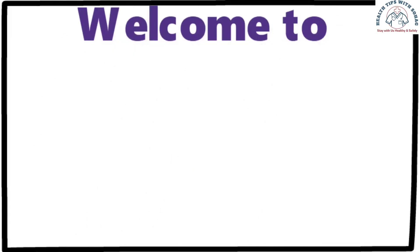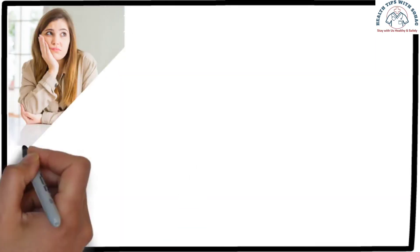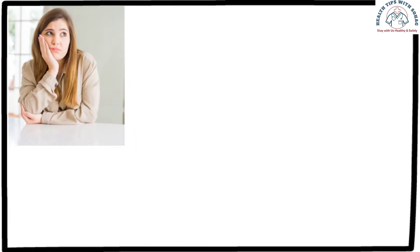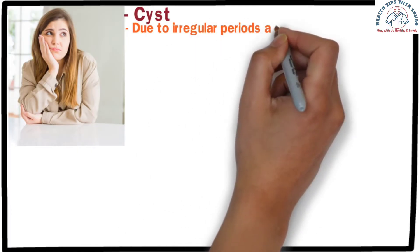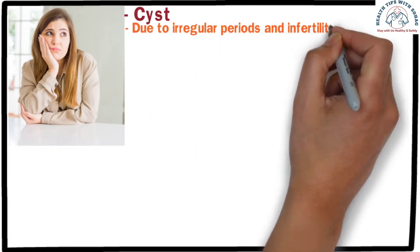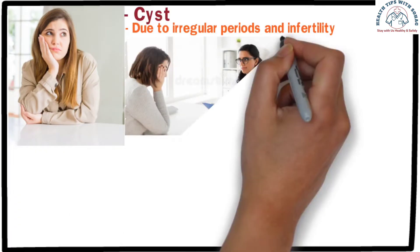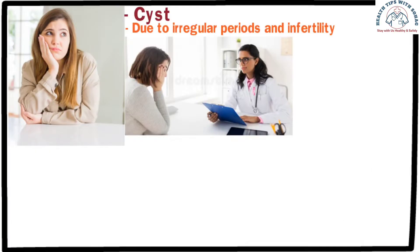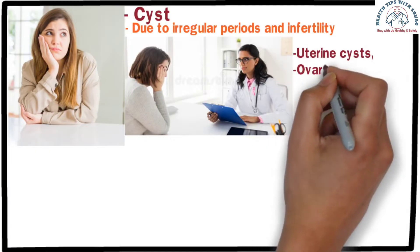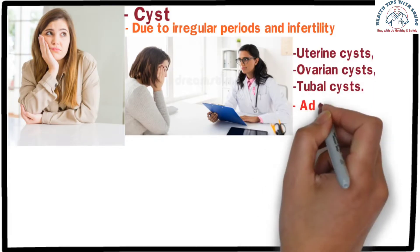Welcome to my channel. At present, a common problem for girls is a condition called cyst. Cysts can occur in various places within the female reproductive system. Due to irregular periods and infertility, when girls visit the doctor, ultrasound often reveals different types of cysts in the reproductive system, such as uterine cyst, ovarian cyst, and tubal cyst. The adnexal cyst is one of them.